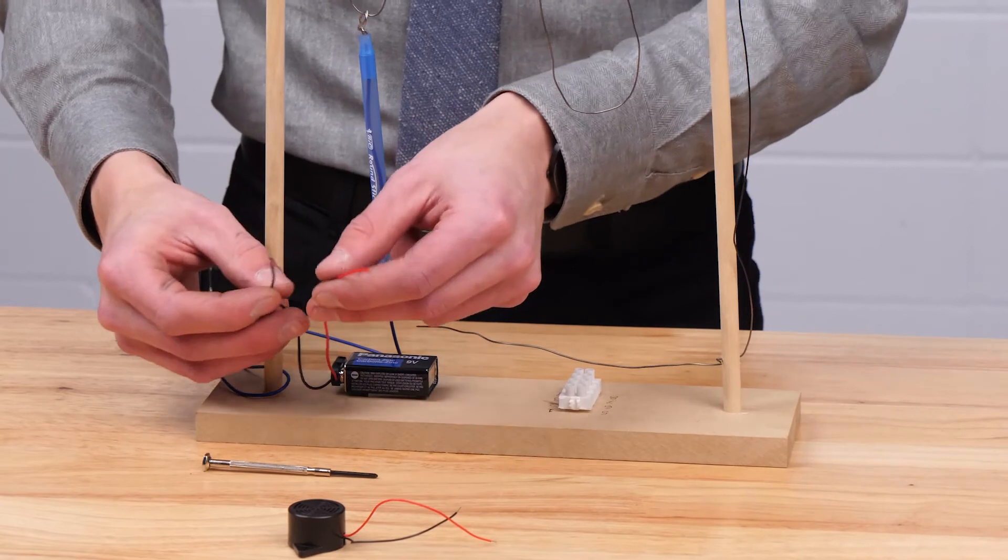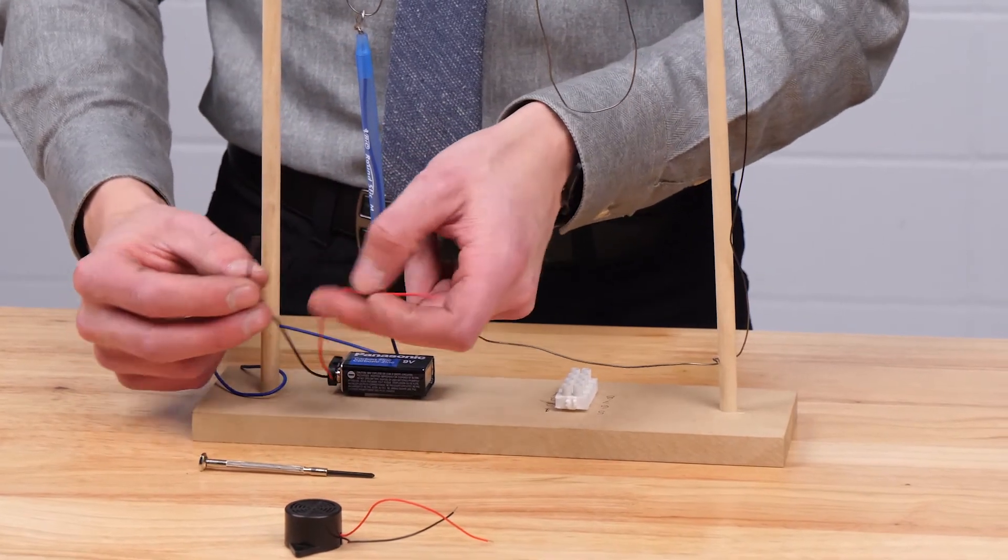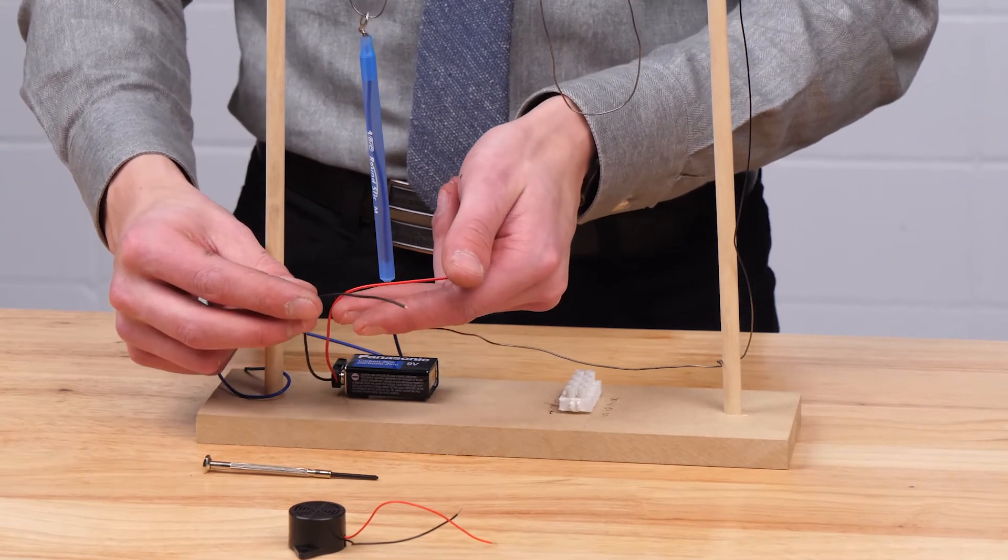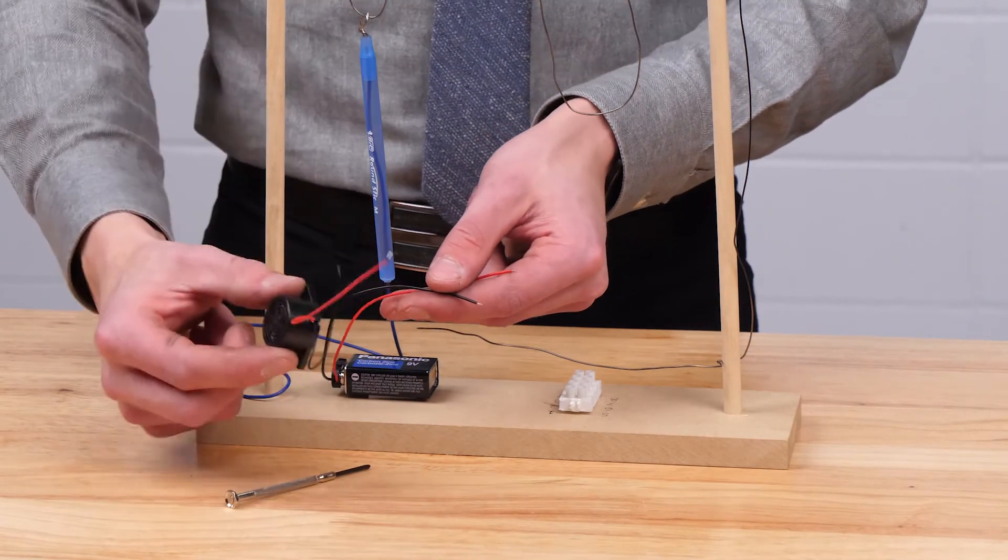It is good to note that the red line is positive and the black line is negative coming from the battery. If these are not hooked up in the correct orientation as per the diagram, this buzzer will not work.